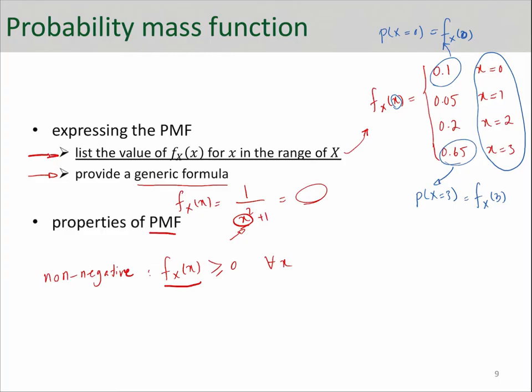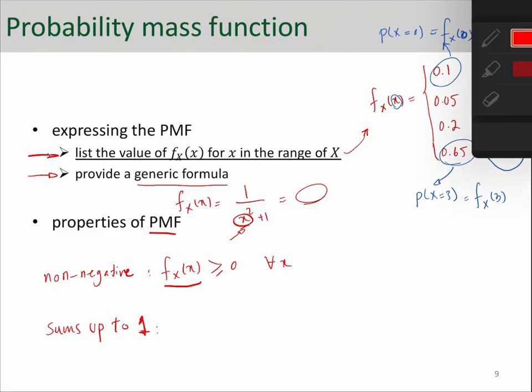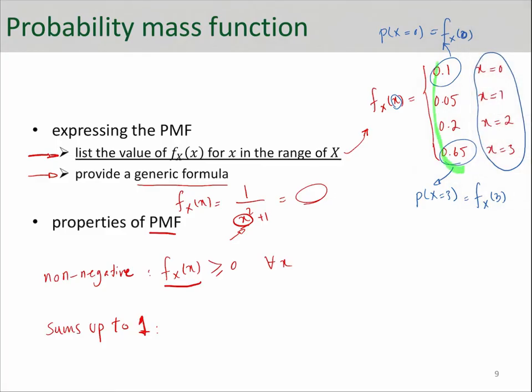Probabilities are always non-negative. The other property is it has to sum up to 1. Meaning that if I add these, they have to sum up to 1; otherwise it's not a valid PMF function. And in this case they do: 0.1, 0.05, 0.2, and 0.65—it adds up to 1.